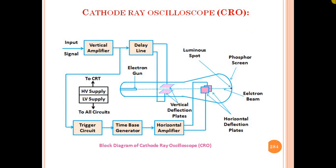Now we are going to discuss about the Cathode Ray Oscilloscope. This is the actual block diagram of the cathode ray oscilloscope. The input signal goes to the vertical amplifier, then to the delay line. We have the trigger circuit, which connects to the time-based generator, and the horizontal amplifier.